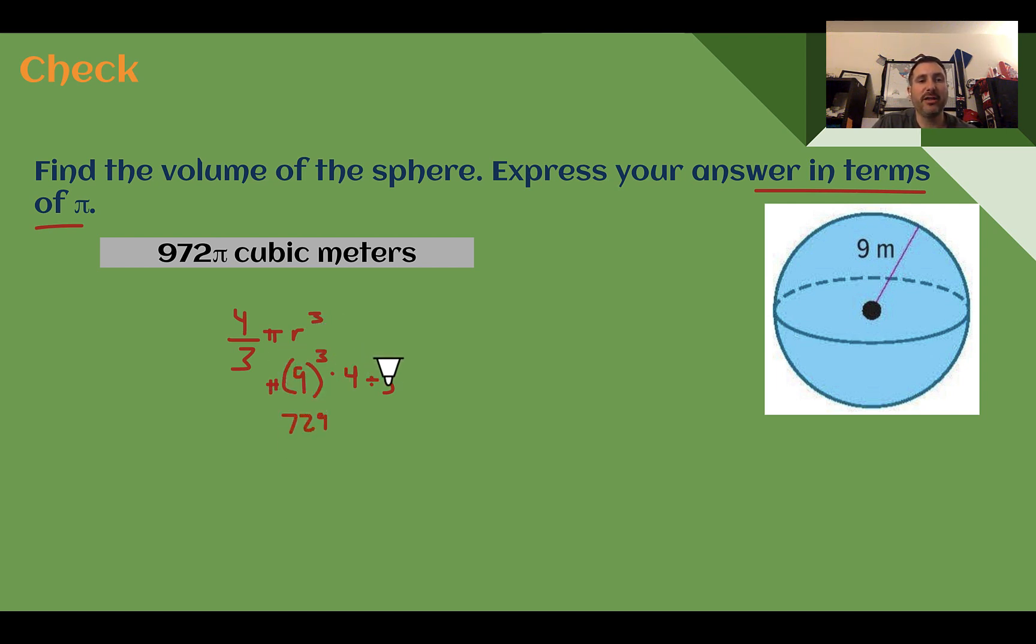And then I need to multiply by 4 and divide by 3. Or if I divide it by 3, I get 243 times 4. 243 times 4 is 972. And then leaving it in terms of pi, so I attach that pi symbol at the end. 972 pi cubic meters. Or we could just put m to the third power for meters cubed.